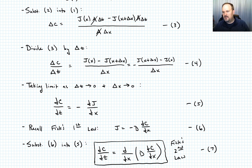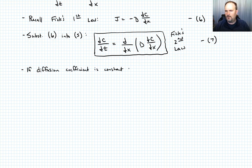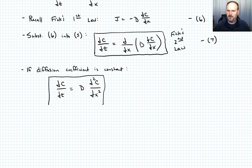In the case where the diffusion coefficient D is constant, we can pull it outside the derivative, and write: partial C with respect to t equals D times the second partial of C with respect to x squared. This is also an expression of Fick's Second Law — Equation 8. We now have a partial differential equation relating how fast the concentration changes to the second derivative in space.